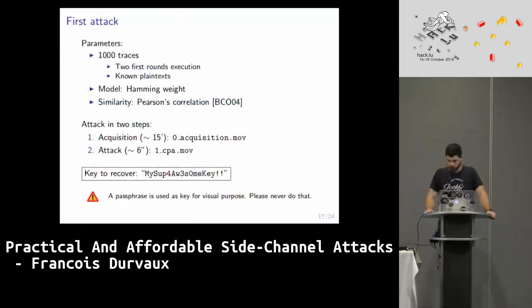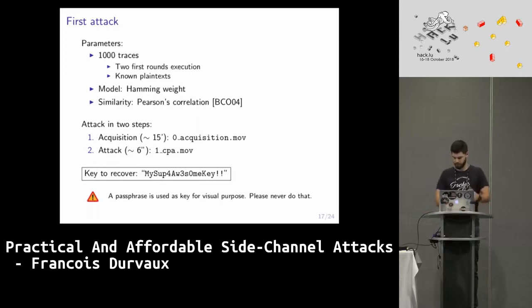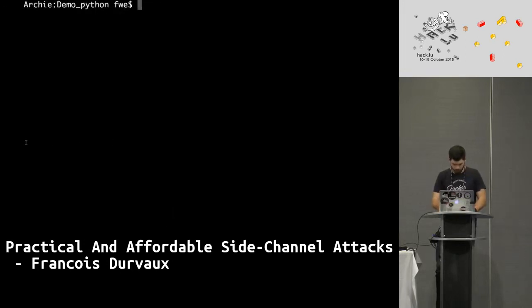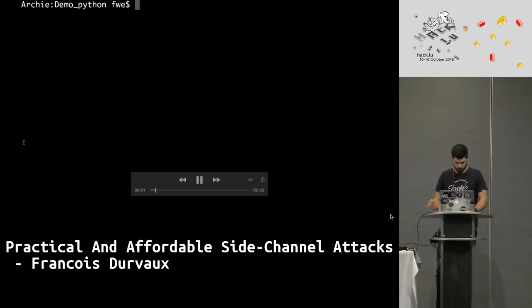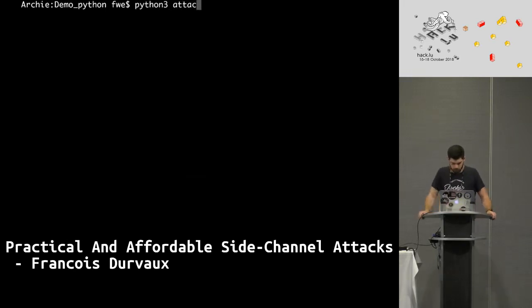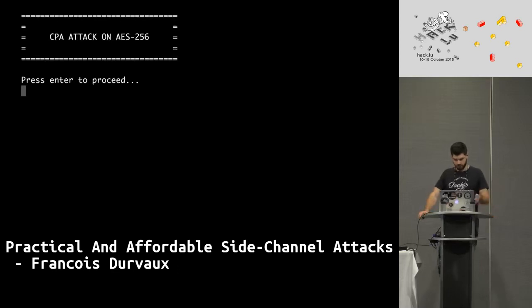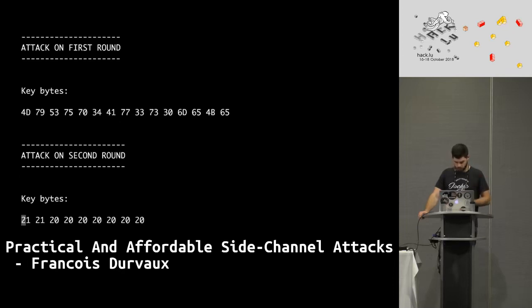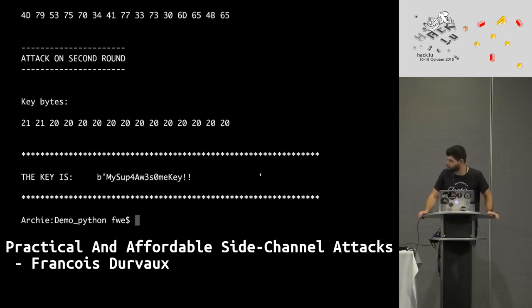For the second part of the attack, with one thousand traces it takes approximately 15 minutes. Then I apply the Hamming weight model and the correlation. Loading the thousand traces and running the attack goes super quickly — just a matter of seconds — and I've broken the 256-bit key.